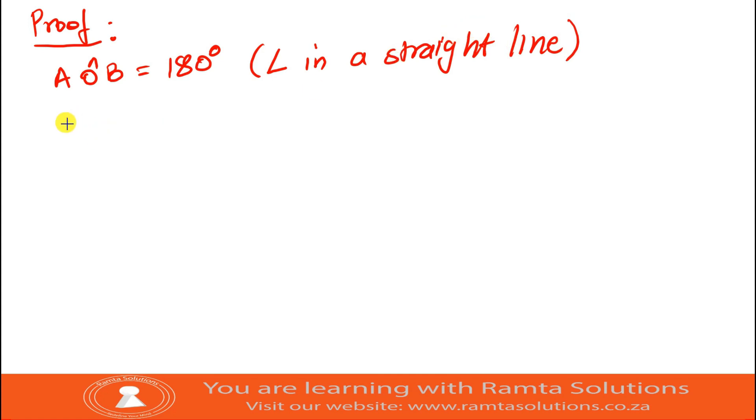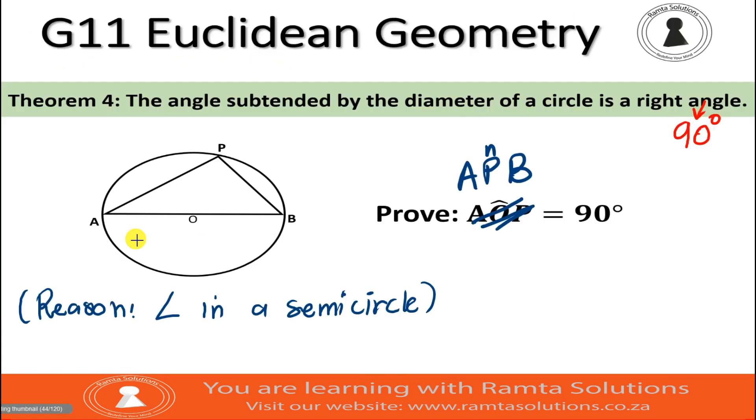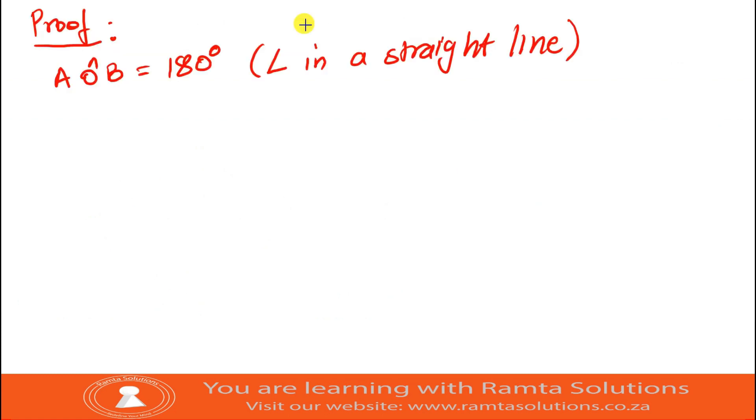Now, we said angle at the center - as you can see, our arc AB subtends angle at the center, and it also subtends angle at the circumference. So we say angle at the center, which is angle AOB, is twice angle at the circumference. What is that angle? Angle APB. What's the reason?